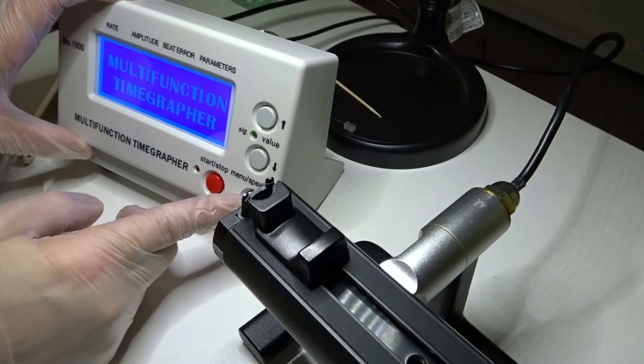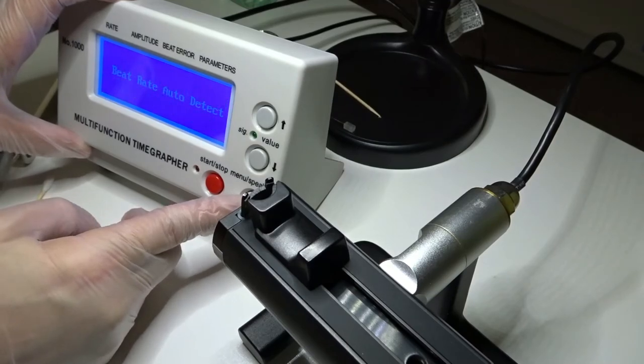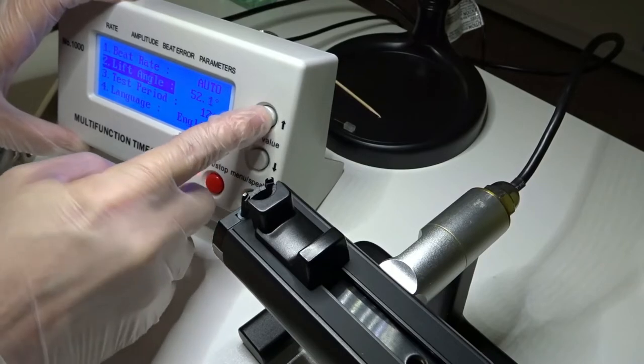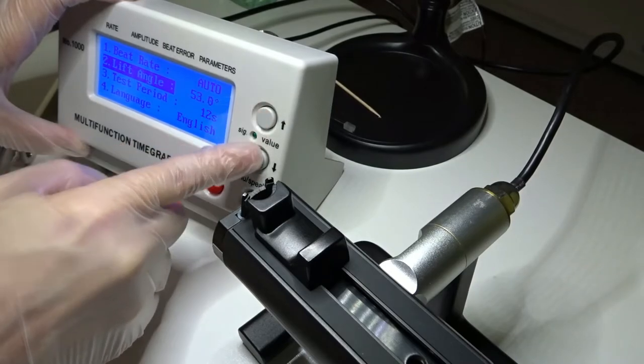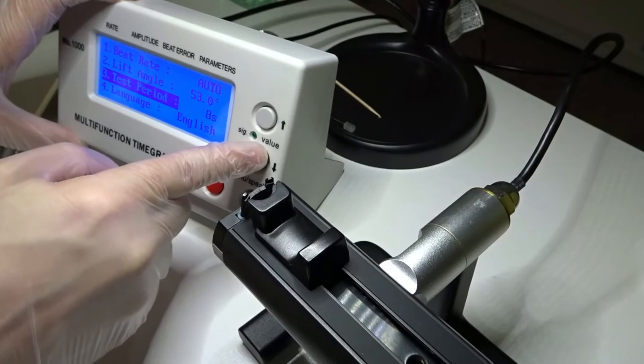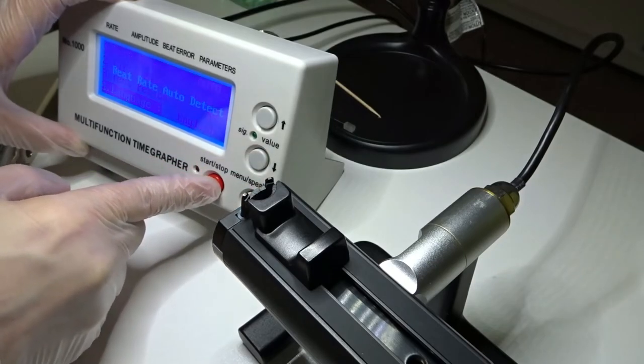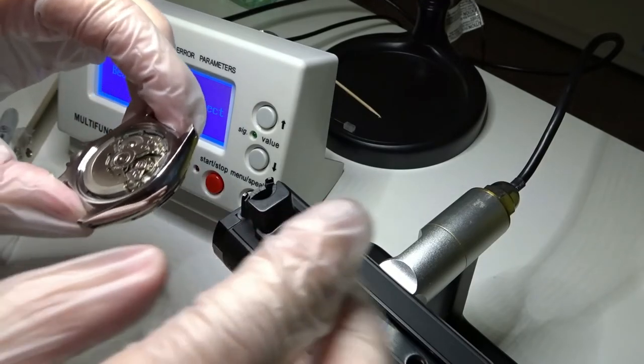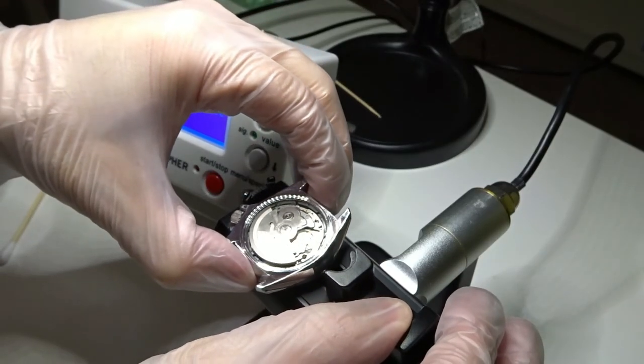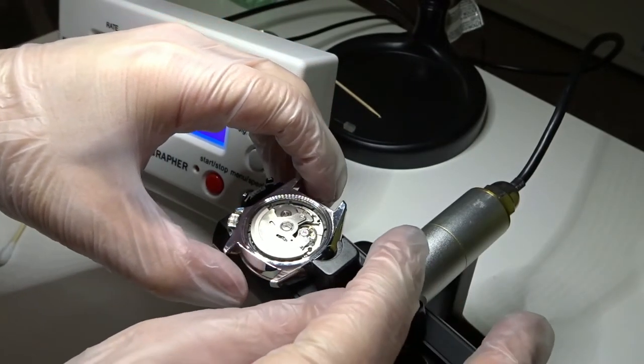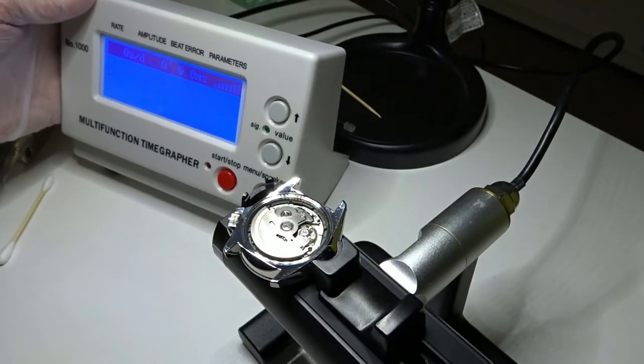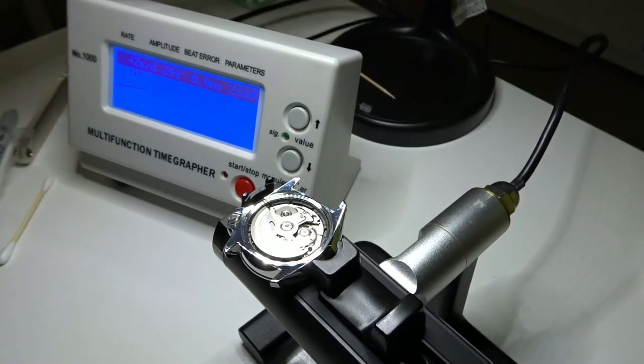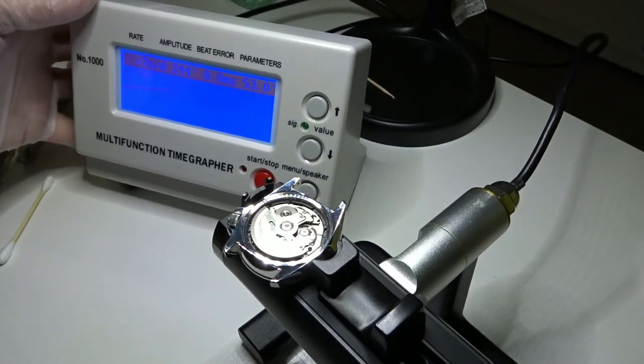So now I'm just checking, since it's a new movement and it wasn't advertised as being regulated, I'm just checking to see what the accuracy rate is on this new movement. Again, it's an NH36, which is basically the same as a Seiko 4R36. And the 4R36 is what originally came with this watch and that's the movement that went bad on me.